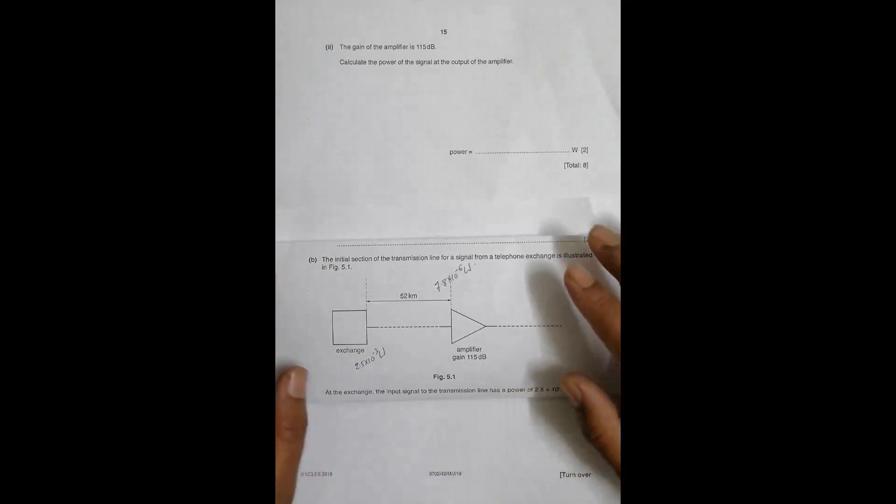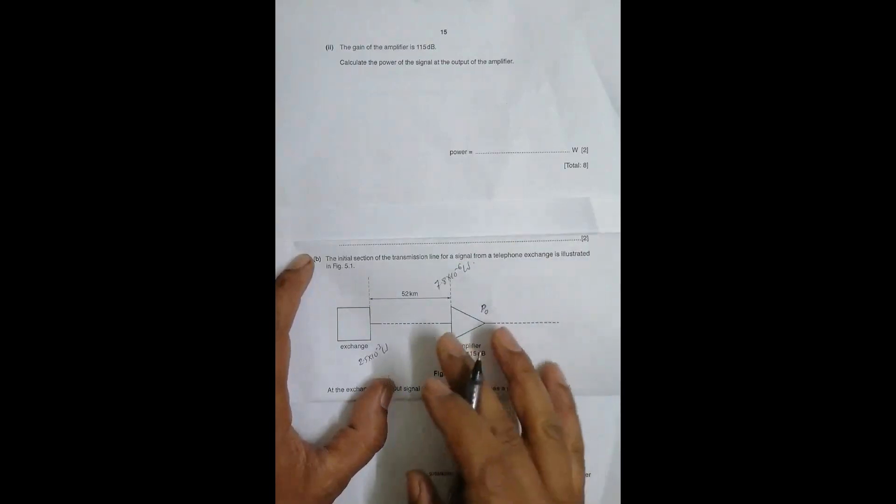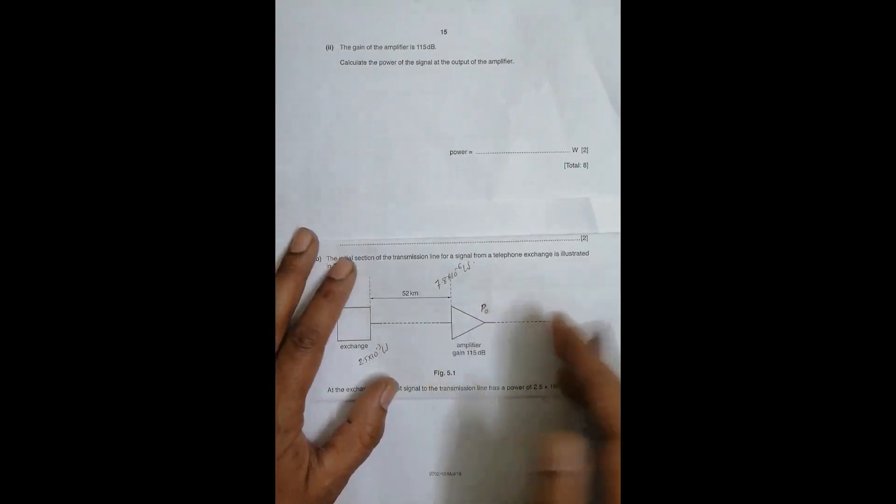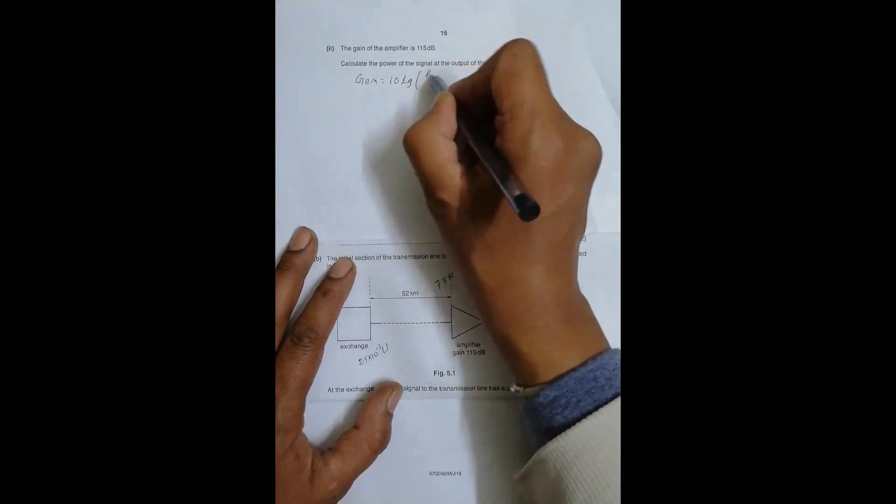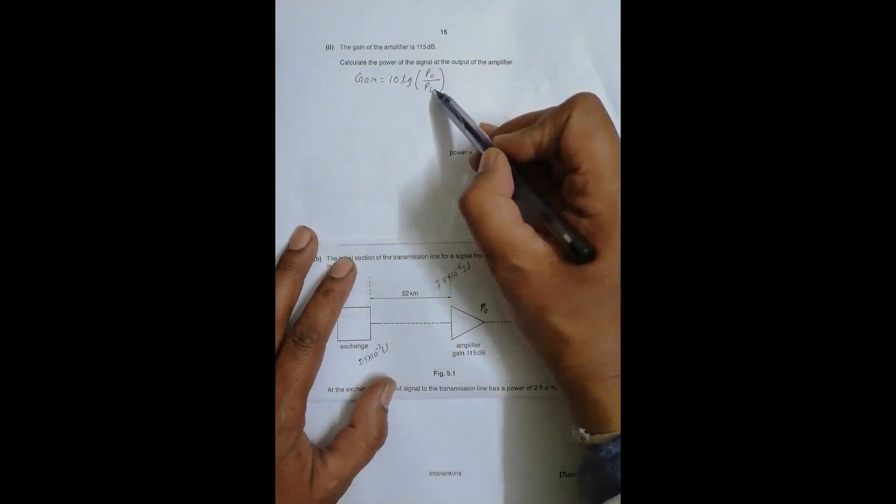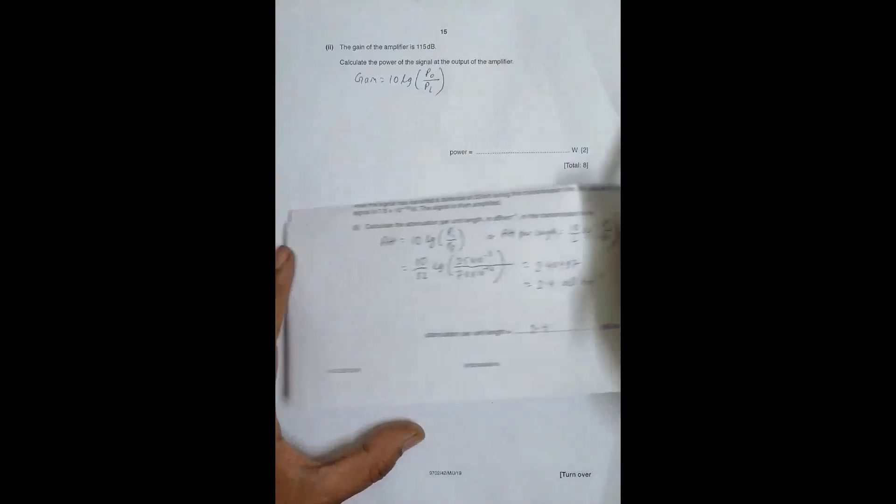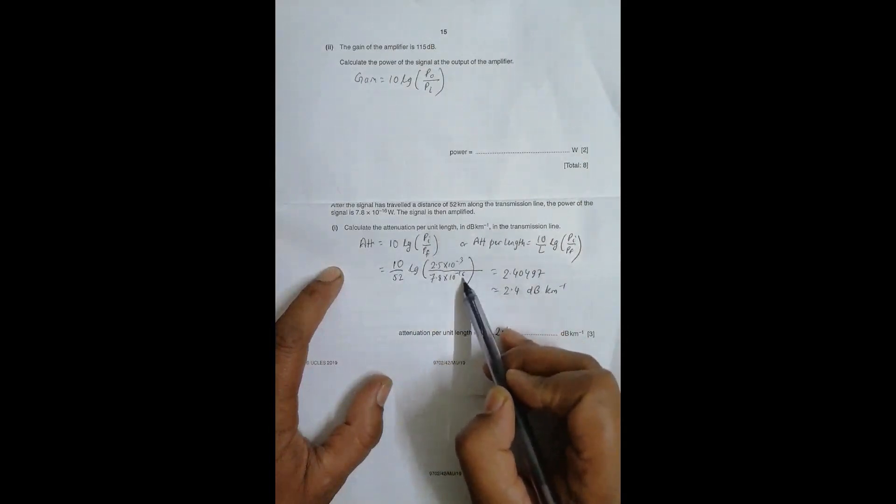The gain of the amplifier is 115 dB, so I have to find the final power output. The formula for gain is also the same: gain equals 10 log (P_output / P_input). This time the input power will be less and the output will be higher. Initially, the input was higher and the final output was lesser, but when we say gain, the output will be higher.